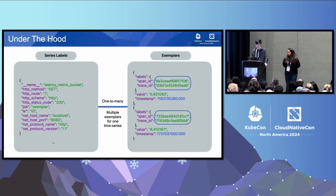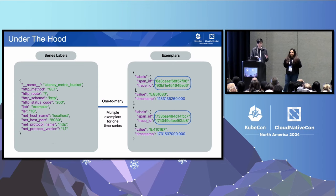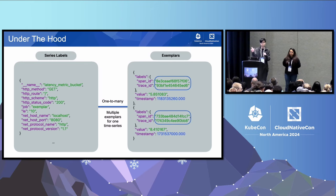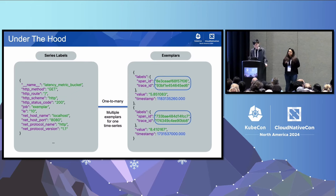Under the hood, what does an exemplar actually look like? On the left-hand side, you'll see an example metric — this is in Prometheus, it's just a latency metric with a histogram. On the right side, you'll see the exemplars related to this metric. In the exemplars, you'll notice that the trace ID and the span IDs are there. So if you're querying the exemplars, all you need to do is pluck those trace IDs out, query your tracing backend, and you should have the trace for that request.